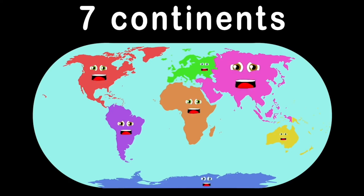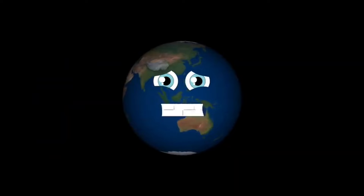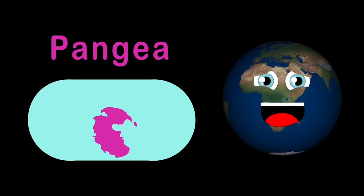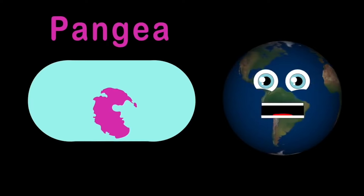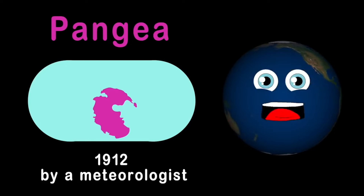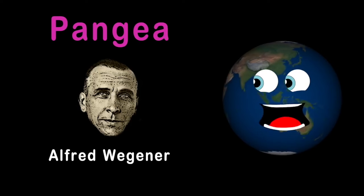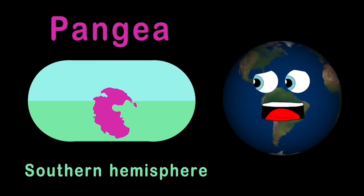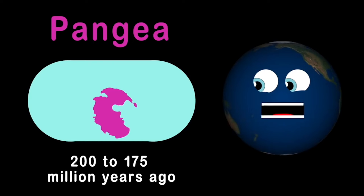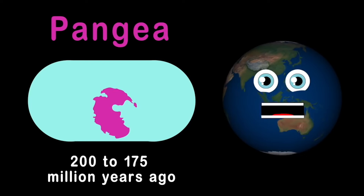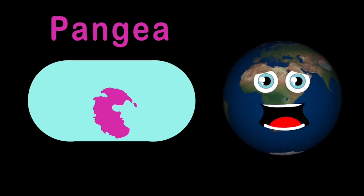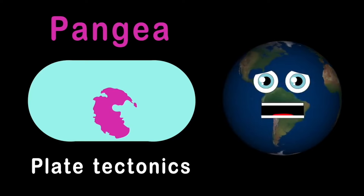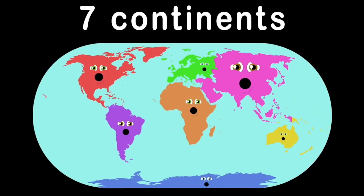We are the seven continents of the world you live on. The continents we know today were once called Pangea, which formed long ago about 300 million years. Pangea was the beginning before the continental drift, first proposed in 1912 by a meteorologist. The word Pangea was given by Alfred Wegener — Pangea means 'all lands.' Most of Pangea sat in the southern hemisphere, surrounded by an ocean called Panthalassa. 200 to 175 million years ago the supercontinent started to break up, now explained by plate tectonics.